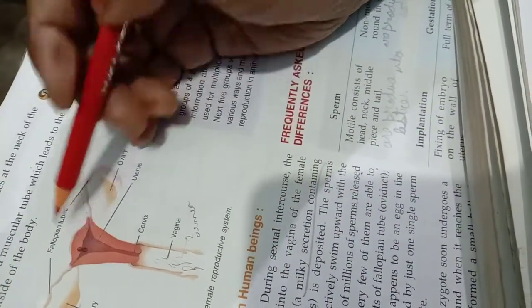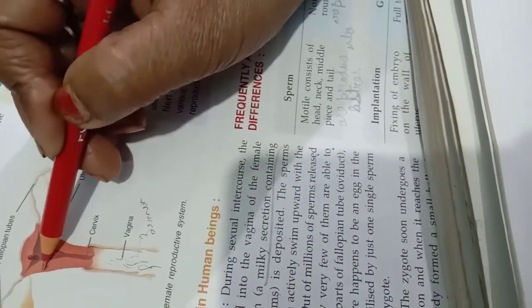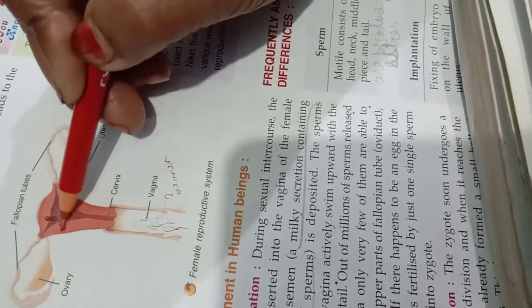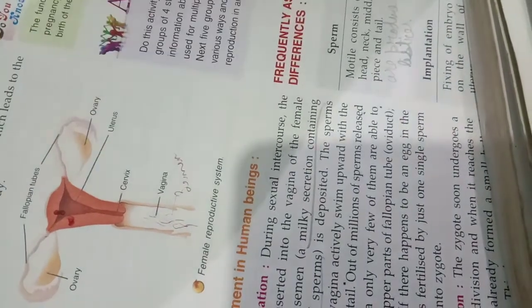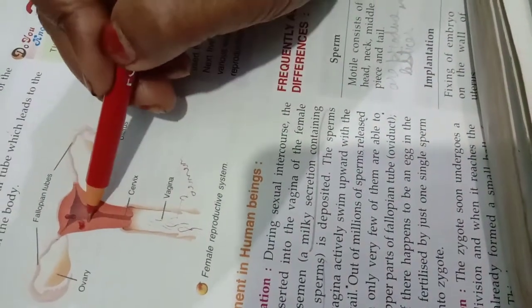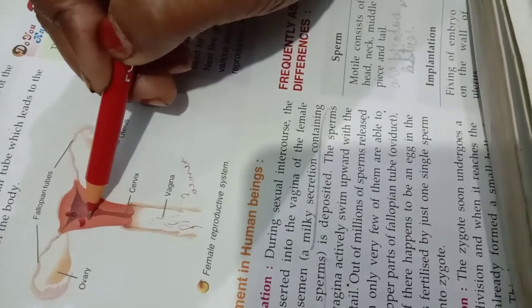So after 10 days after fertilization, the embryo which has now become looks like a ball, small ball, mulberry, the ball. So what happens? It will move downward and gets fixed into the uterus on either this side or this side. And this process is called as implantation.